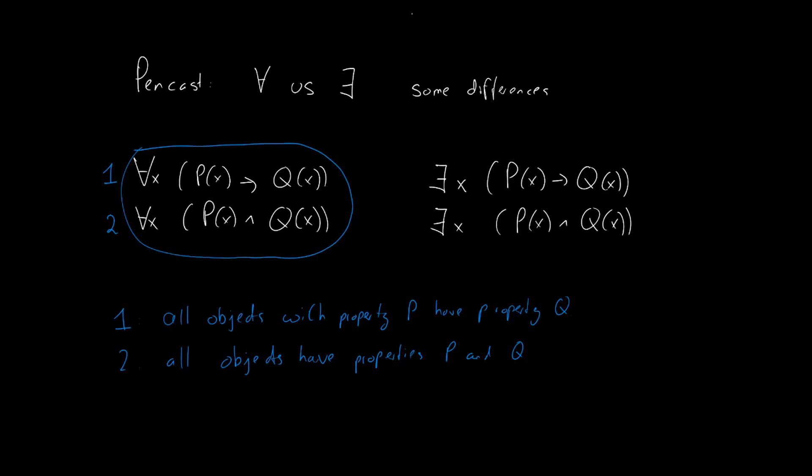Let's take a look at these two there exists claims. The first one says that there is an x such that if x has P(x), then x has Q(x) as well. And the second one says that there is an x such that x has both properties P and Q.